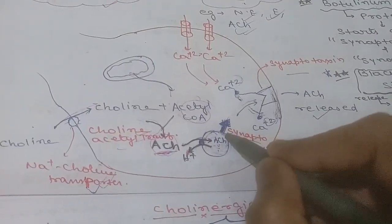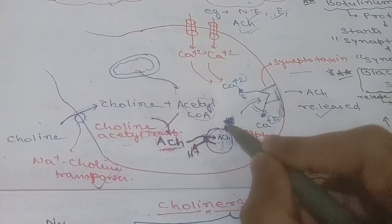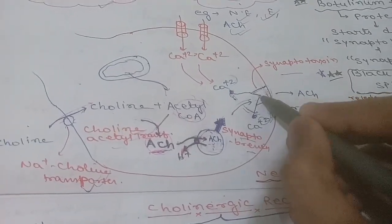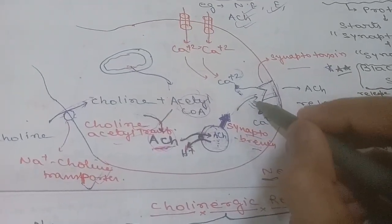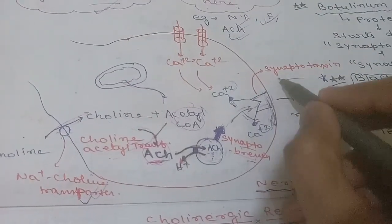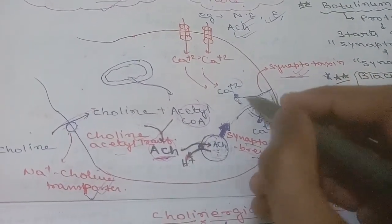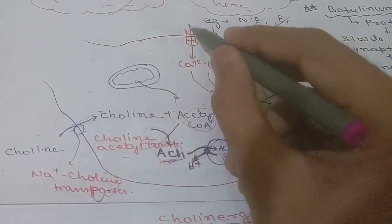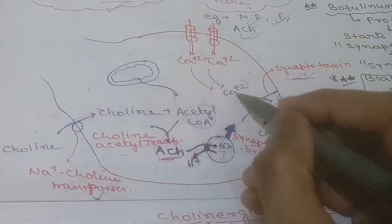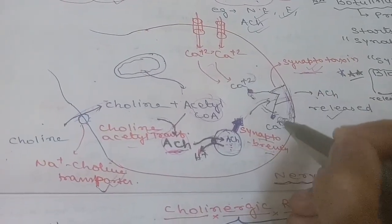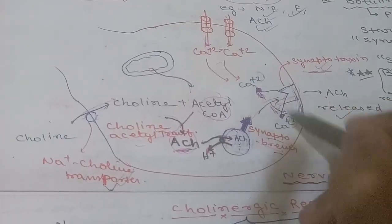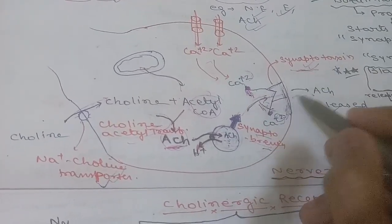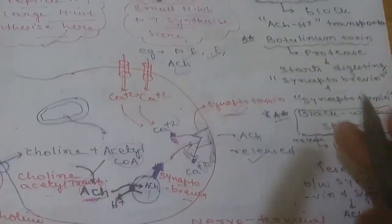The vesicle containing acetylcholine must release it into the synapse. The vesicle protein synaptobrevin binds to the membrane protein syntaxin. Calcium influx, triggered by depolarization, activates this interaction, allowing synaptobrevin to bind syntaxin and cause acetylcholine exocytosis.